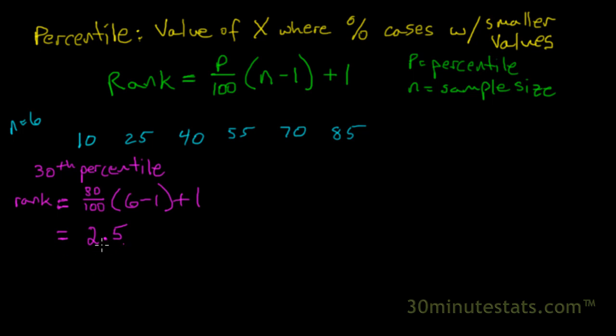That gives us the rank, or the position along this list. In other words, this value is going to fall between 2 and 3, number 2 and number 3, in terms of the observations. We can go 1, here's number 2, and here's number 3, so between 25 and 40.